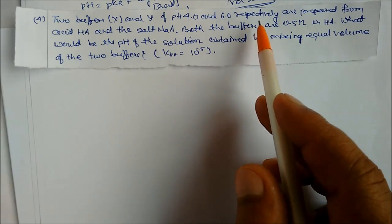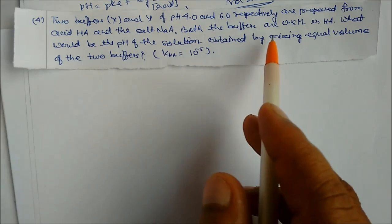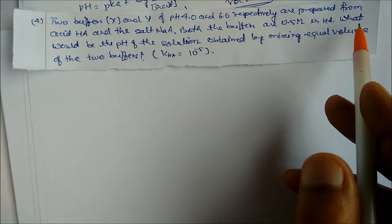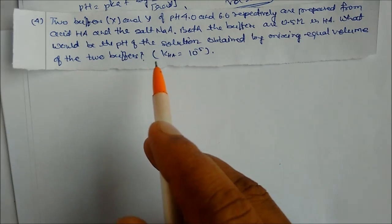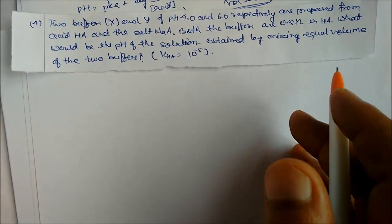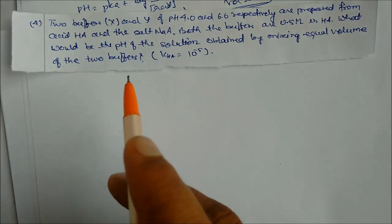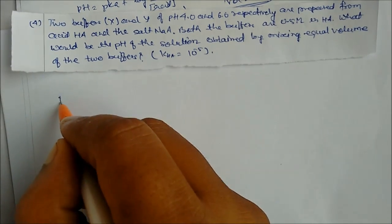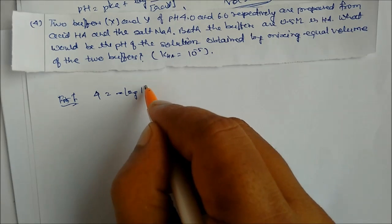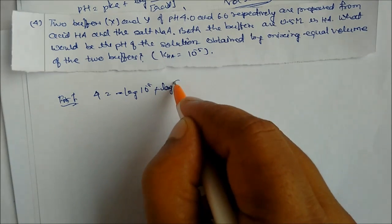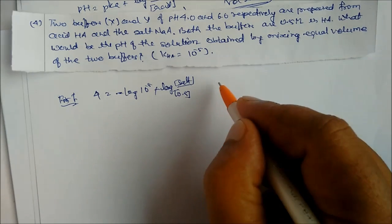Next problem: two buffer solutions X and Y of pH 4 and 6 are prepared from acid HA and salt sodium A. Both buffers are 0.5 molarity in HA. What would be the pH of the solution obtained by mixing equal volumes of the two buffers? We must first find the salt concentration in each case.